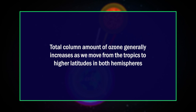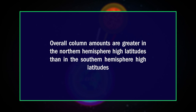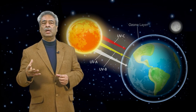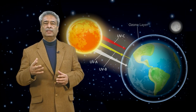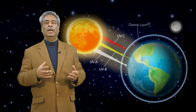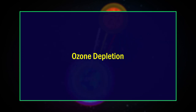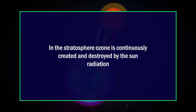The total column amount of ozone generally increases as we move from the tropics to higher latitudes in both hemispheres. However, overall column amounts are greater in the northern hemisphere high latitudes than in the southern hemisphere. The highest amounts of column ozone over the Arctic occur in the northern spring (March to April), while the lowest amounts over the Antarctic occur in the southern spring (September to October).